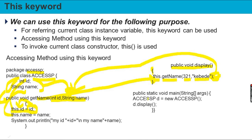We will declare int id as the source type and string name as variables. For the final output we create an object, call d.display(), execute the program, and observe the output statement from the course information.